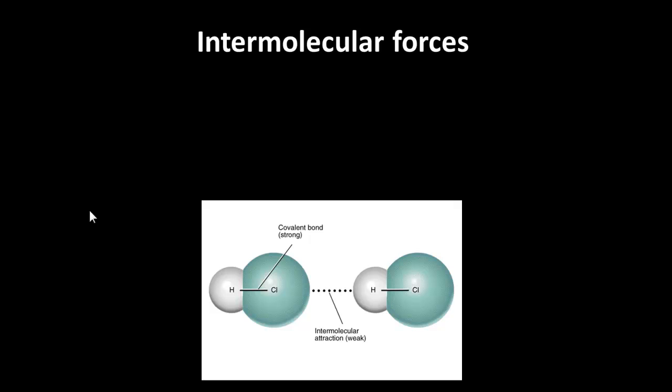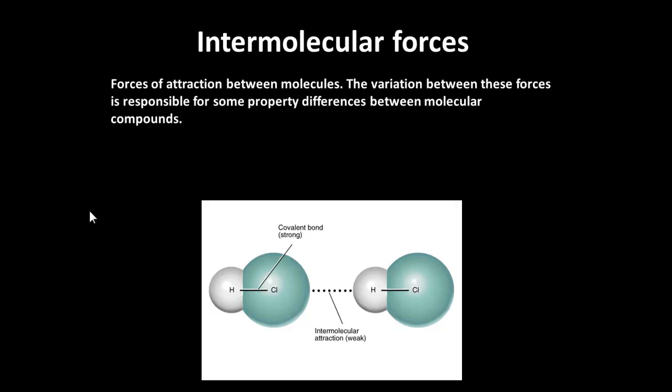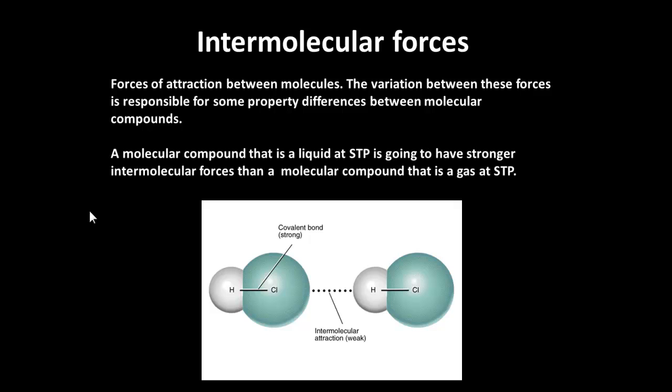Covalent bonds then have these intermolecular forces between molecules very often, and so we have intermolecular attraction. It's a weak force, but intermolecular forces sometimes have to be considered. They are the forces of attraction between molecules. So they're only concerned with molecules that have covalent bonding, obviously. And variation, then, is responsible for some property differences.